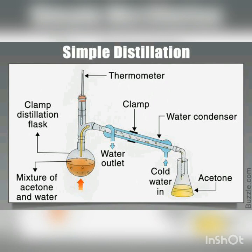As shown in the slide, the example used is a mixture of acetone and water. Acetone has a boiling point of approximately 56 degrees Celsius and water has a boiling point of 100 degrees Celsius — a sufficient difference for simple distillation. The liquid with the lower boiling point distills first and the liquid with the higher boiling point distills later.